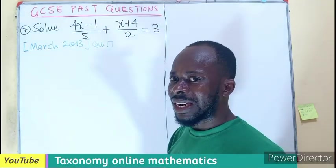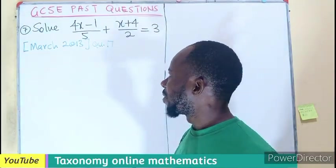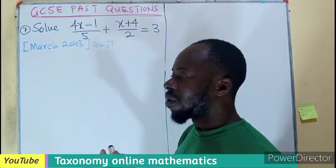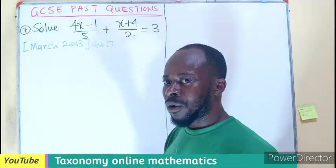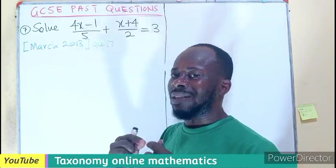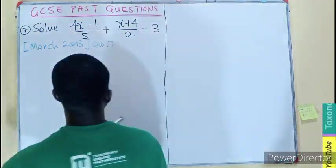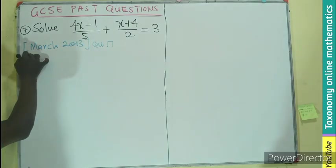We have 4x minus 1, all divided by 5, plus x plus 4, all divided by 2, equals 3. Don't forget that 3 could also be written as a fraction, as 3 divided by 1. So let's see how we can deal with that.